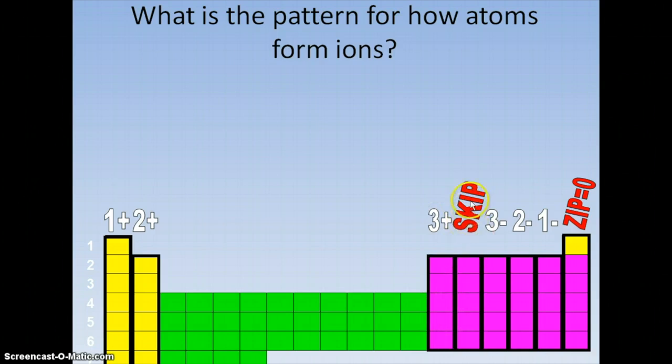This next column, we're going to skip. We'll talk about it later. And then we have 3 minus in this column, 2 minus in that column, 1 minus in this column, zip.